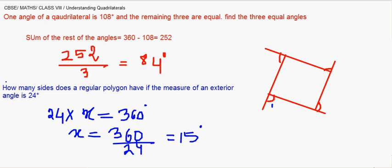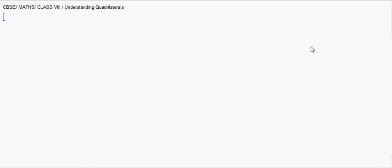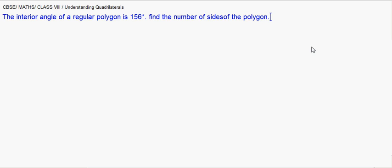This is another way around question. The interior angle of a regular polygon is 156 degrees. Find the number of sides of the polygon. Now we don't have to draw the figure every time.